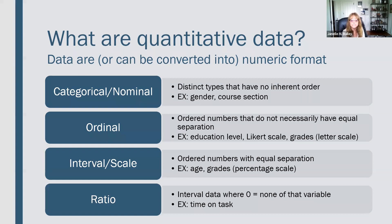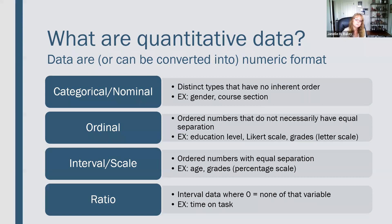The third type is interval or scale data — ordered numbers with equal separation. Age, for example, has basically equal separation: the difference between age seven and eight is the same as the difference between age seventeen and eighteen. Grades on a percentage scale are interval, whereas a letter grade scale would only be ordinal. Finally, ratio data is interval data where zero means there is none of that variable — for example, time on task. In temperature scales, Celsius and Fahrenheit are interval, whereas Kelvin is ratio.